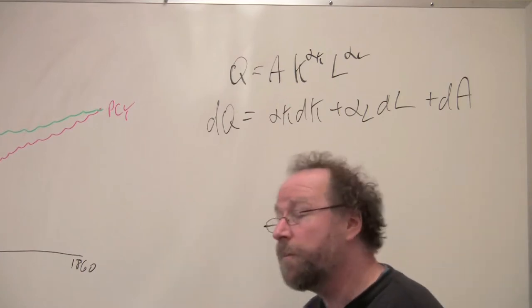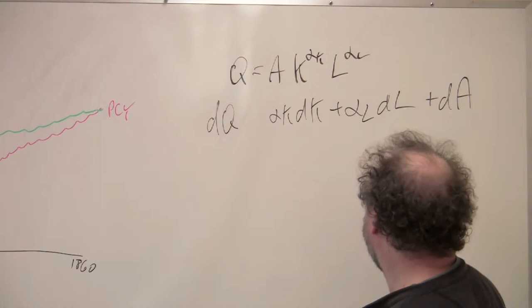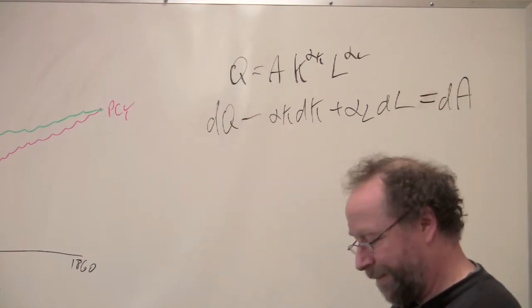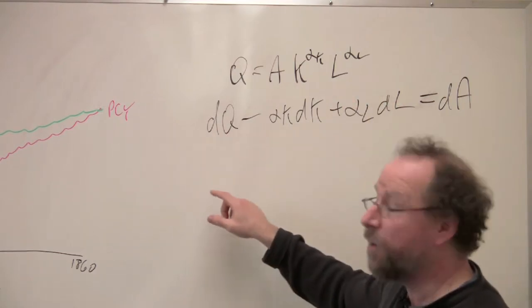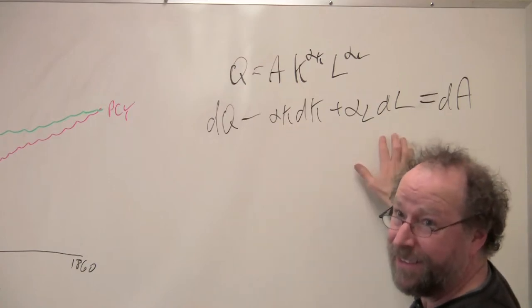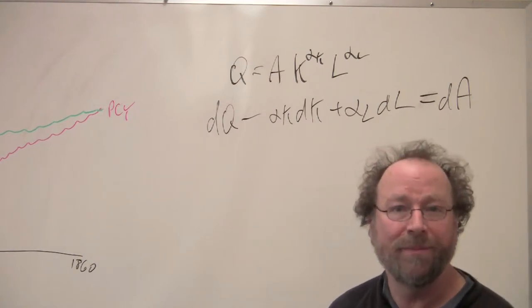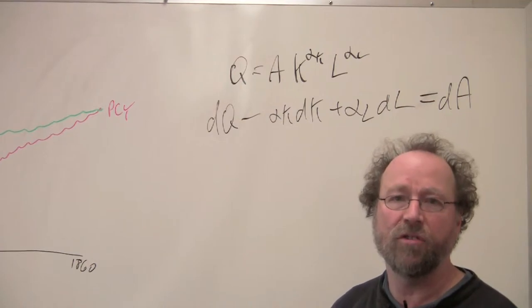If you want to, you can change this to change the terms here. Just move this stuff over to the other side. Output minus these things, what's due to capital and what's due to changes in labor, gives you the residual, which Solow took as a measure of technological change.